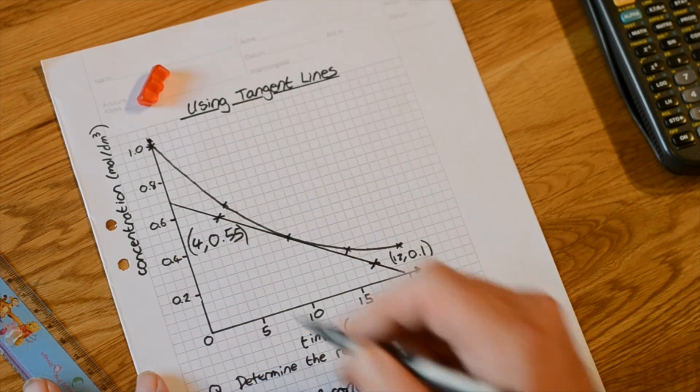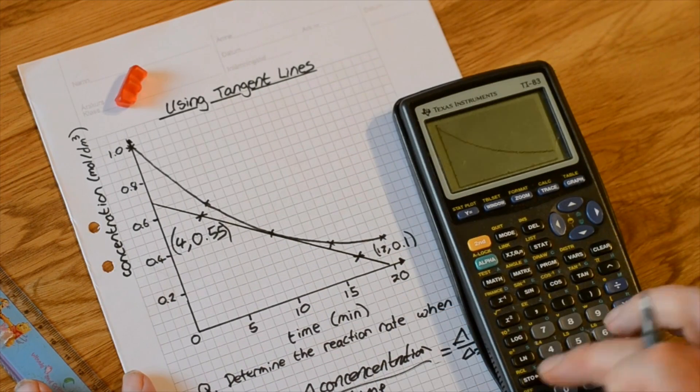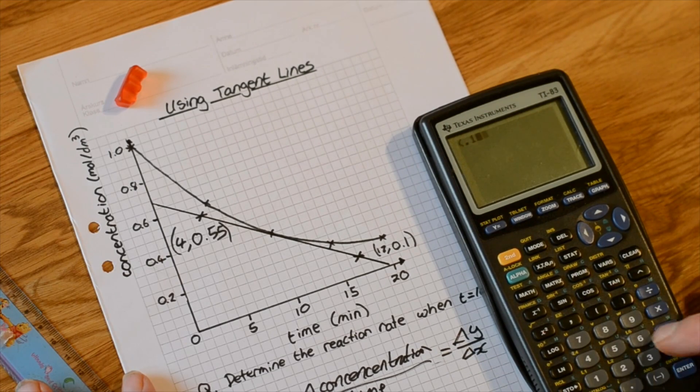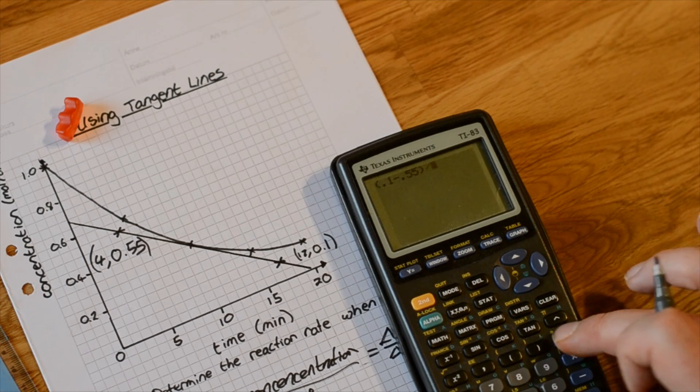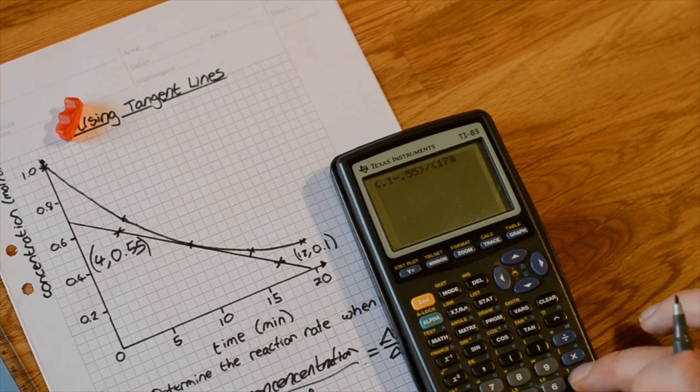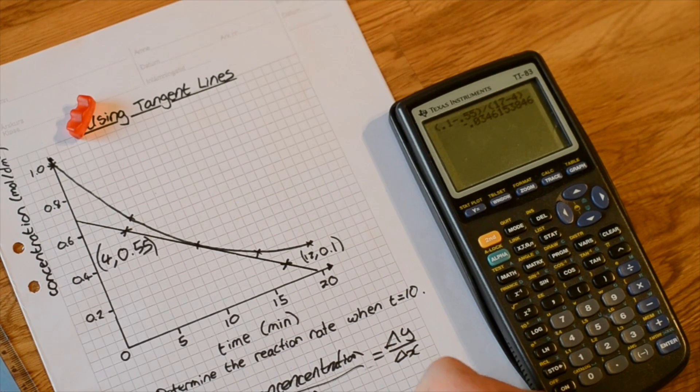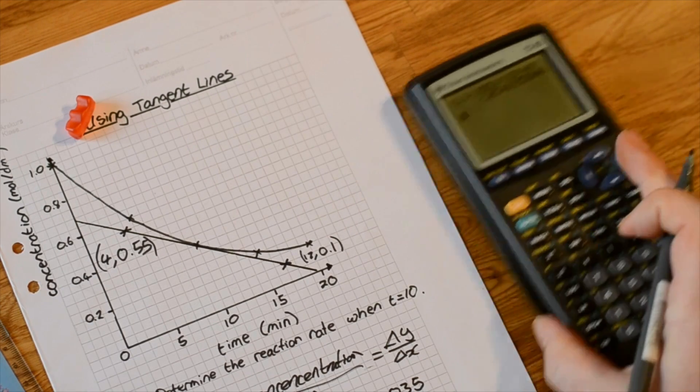We have the x value here at 4. We can put this into our calculator with 0.1 minus 0.55 divided by 17 minus 4. This gives us a reaction rate of, the difference quotient is minus 0.035 approximately.